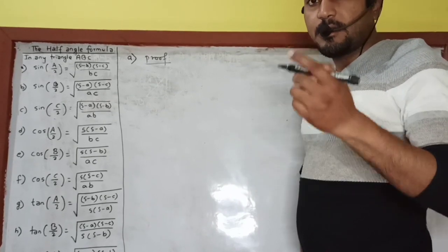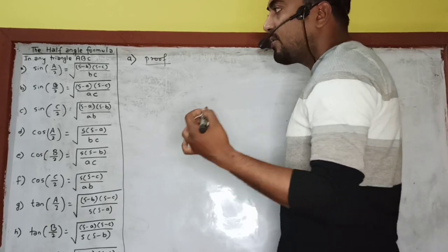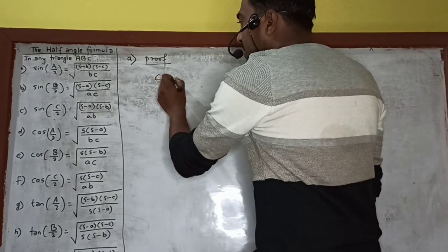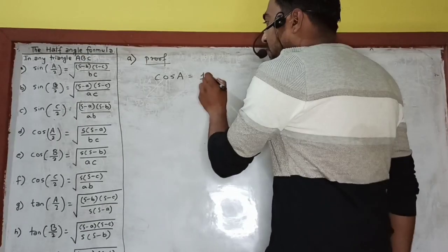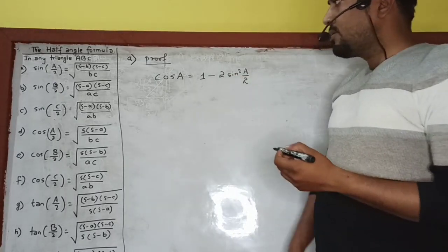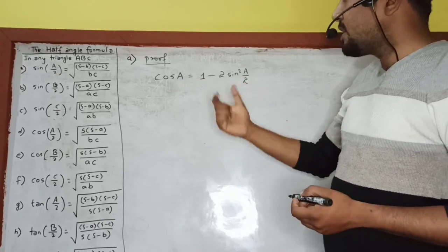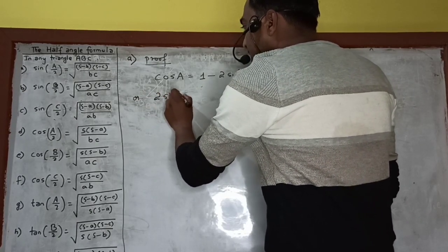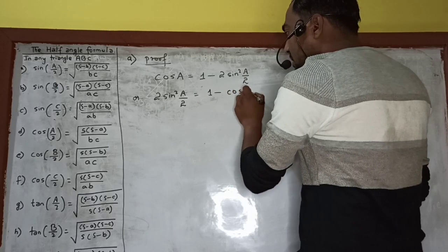So in trigonometry we have learned many half-angle formulas. To prove this first one — sin(A/2) — let us use the formula of cos A. Cos A is equal to 1 minus 2 sin²(A/2). From here, we get: 2 sin²(A/2) is equal to 1 minus cos A.